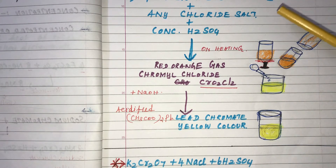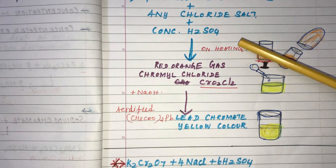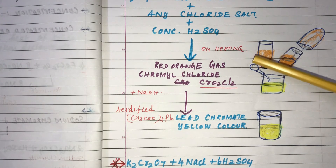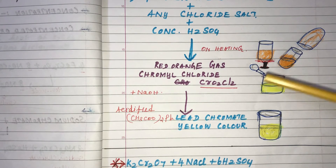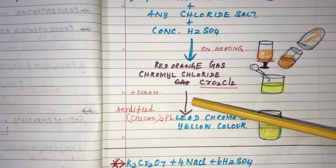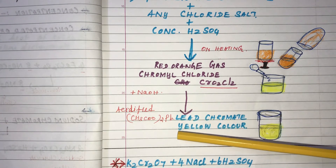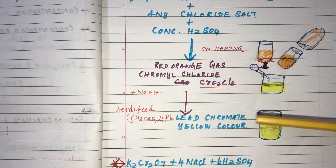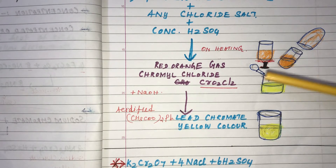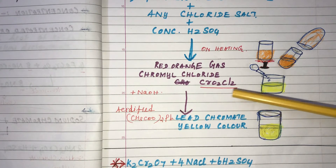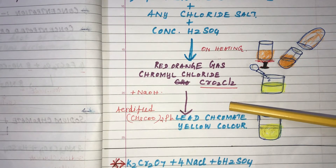To summarise: Potassium Dichromate, the given chloride salt, and concentrated Sulphuric Acid are taken. On heating, it gives red-orange vapours. The red-orange vapours are collected in another test tube, then added with Sodium Hydroxide and acidified Lead Acetate, giving a yellow colour. The yellow colour formed is Lead Chromate. The evolving red-orange vapours are Chromyl Chloride with the formula CrO₂Cl₂.